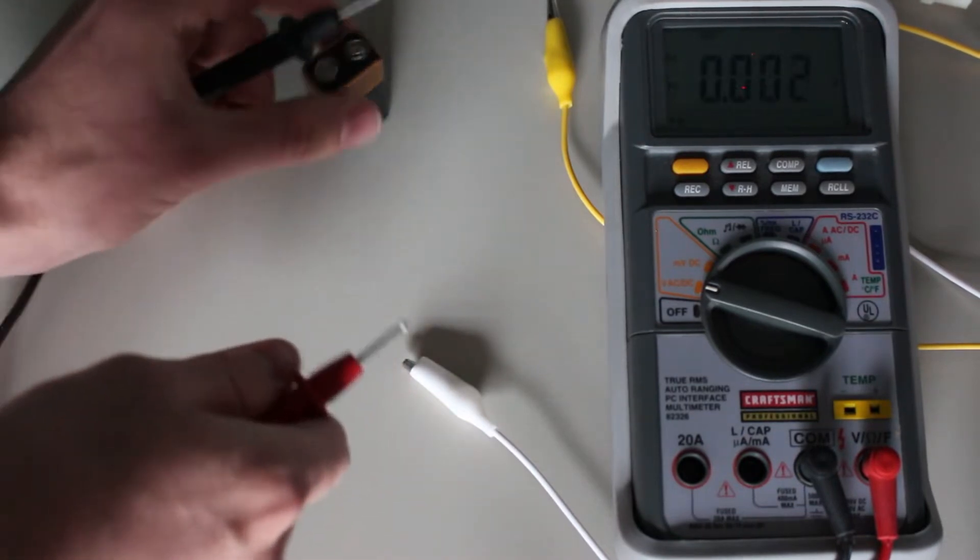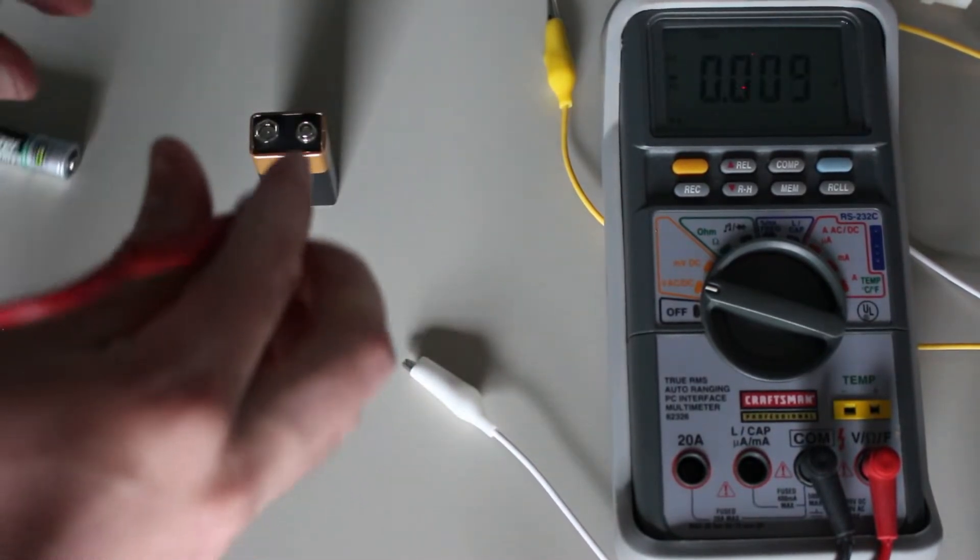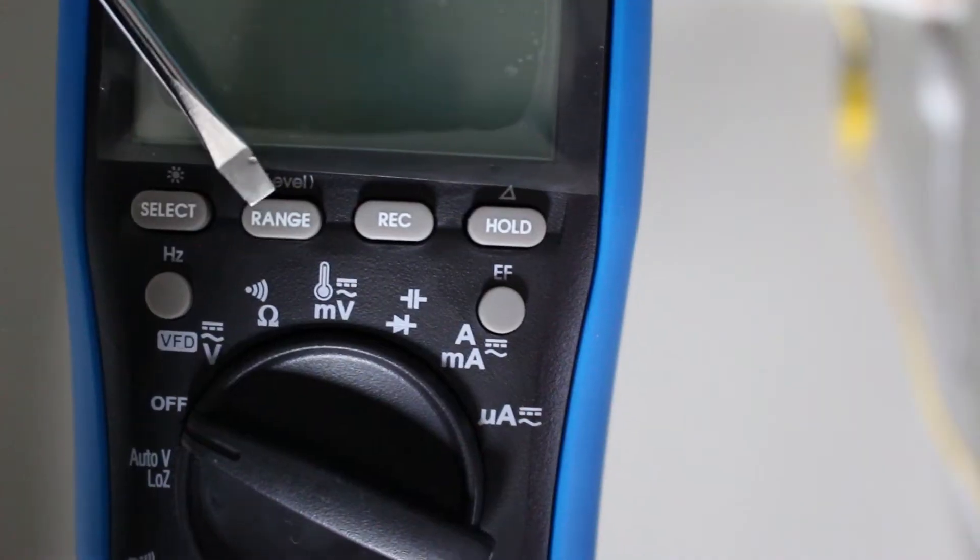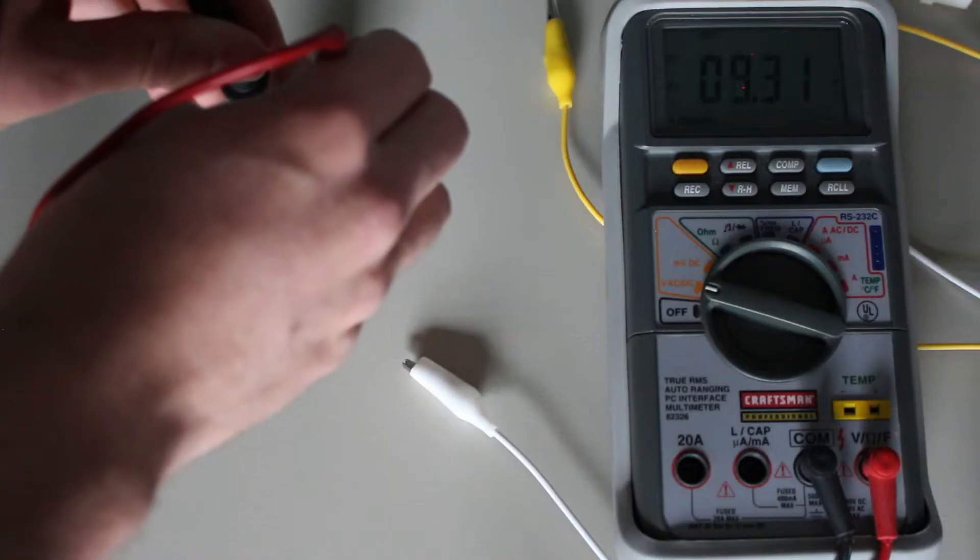And if you do get an auto-ranging multimeter, make sure that it does allow for manual ranging, because you may find yourself in a situation where you want a range that differs from what the multimeter thinks you want.